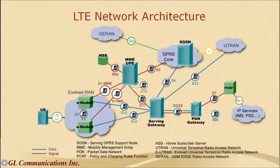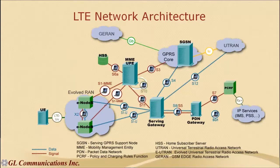The next important element is the PDN gateway. It allocates an IP address to the mobile. Most of the time it initiates dedicated bearer setup. Once established, it is responsible for transport-level packet marking in uplink and downlink direction — setting DSCP IP level based on the QCI of the associated EPS bearer. It does uplink and downlink service-level charging, gating control, and rate enforcement. It also acts as a PCEF to ensure the requested quality of service is established and enforced.